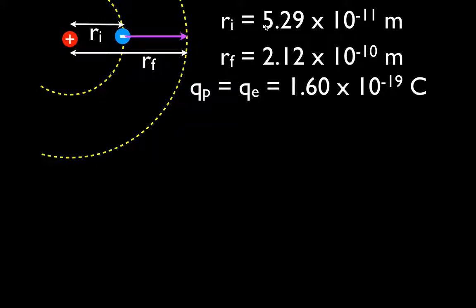The initial distance between the proton and the electron is 5.29 times 10 to the minus 11 meters. The final distance is 2.12 times 10 to the minus 10 meters. The charge on the proton is equal to the charge on the electron: 1.6 times 10 to the minus 19 Coulombs. We're going to figure out what is the change in potential energy — how much work we would do to move that electron from the first energy level to the second energy level.